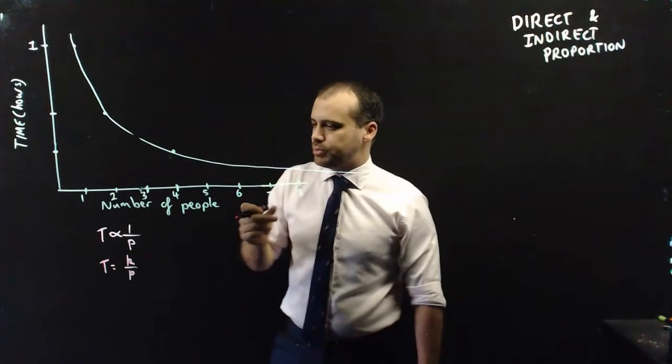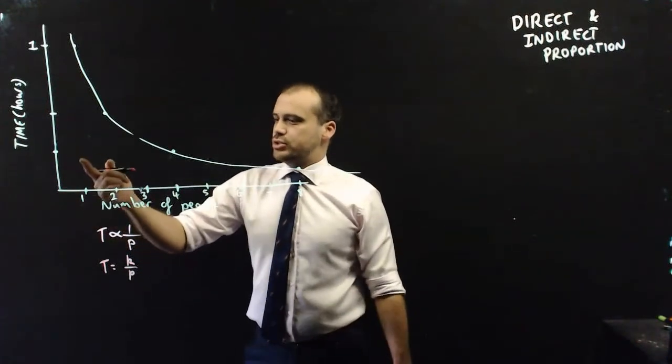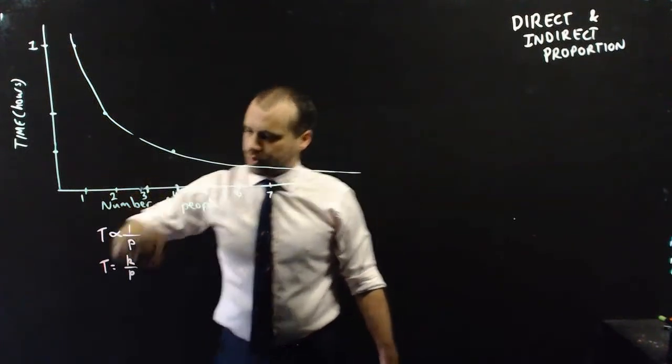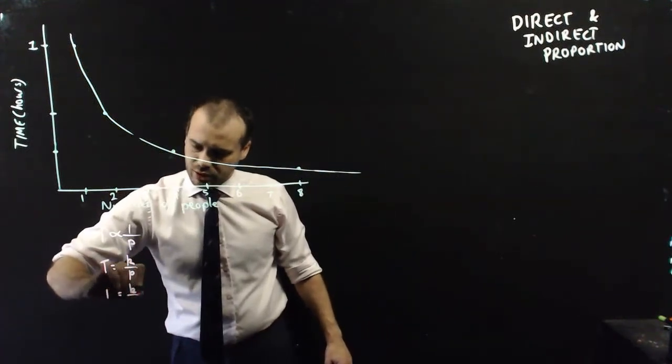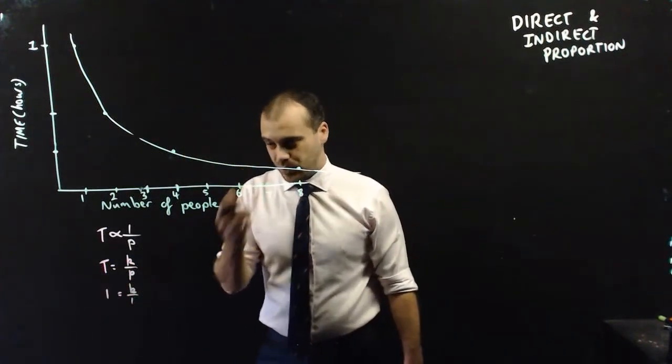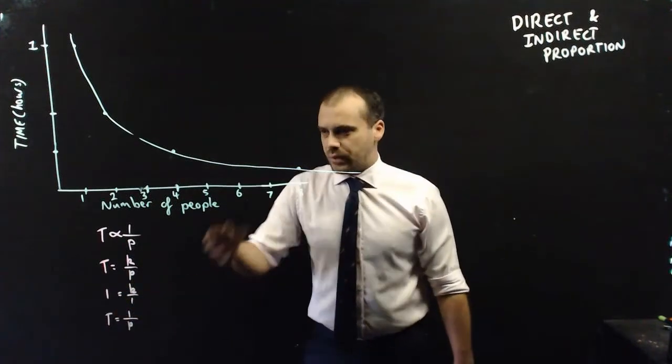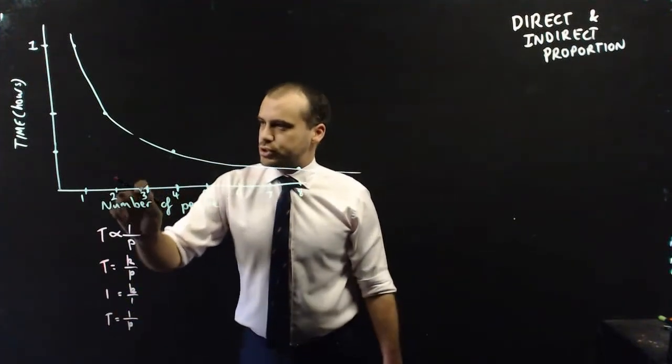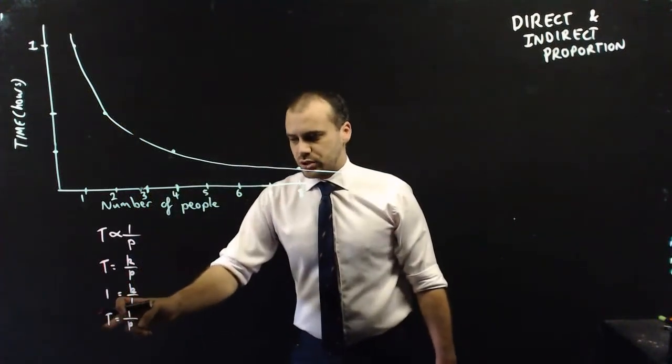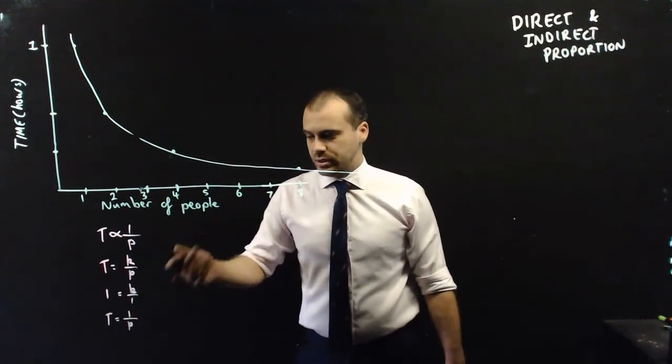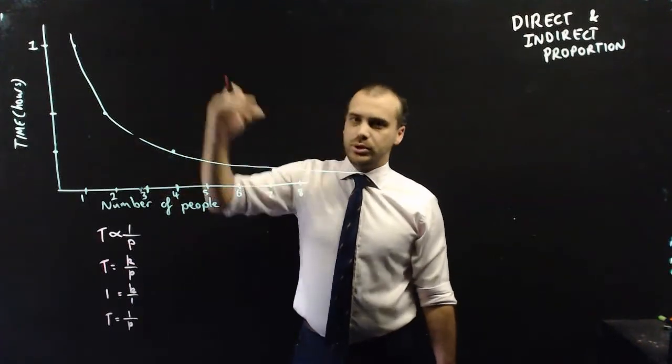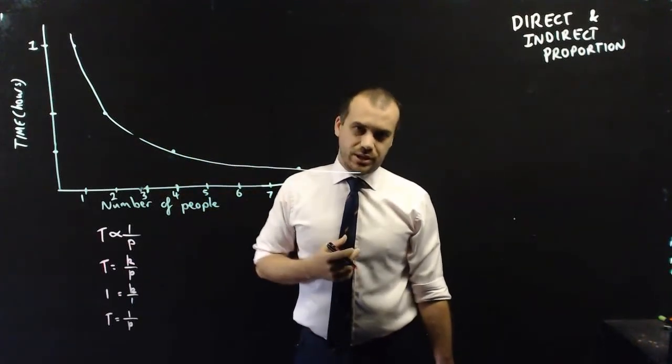Now, this is a very simple example, and you'll see why. Let me choose a point here. Let's say one person, one hour. So, 1 equals k over 1. We can see that the constant of proportionality here is 1. So, t equals 1 over p. And we can see that if we sub in the number 2 here, let's say, t equals 1 over 2, that means that the time is going to take half an hour. If we sub in four people, it's going to take a quarter of an hour, which is what our graph is showing here.